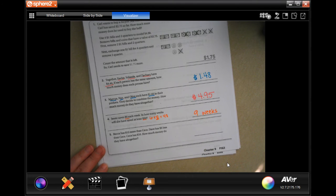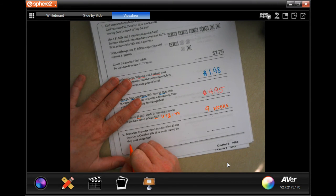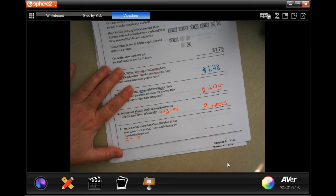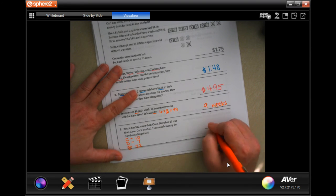Becca has 12 more than CC. Jade has three less than CC. CC has ten dollars. How much money do they have all together? So CC has ten, Jade has three less than CC so that's seven, and Becca has twelve dollars more so she's going to have 22. Now 22 plus 10 is 32 plus seven is 39 dollars.